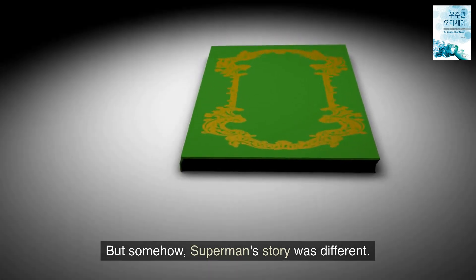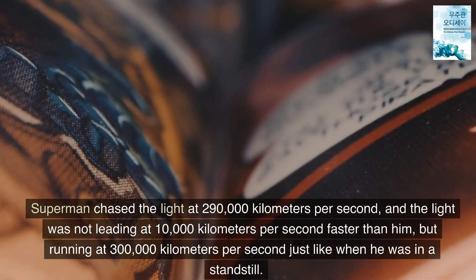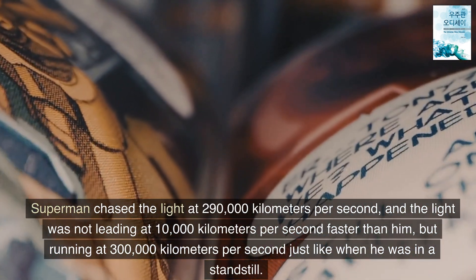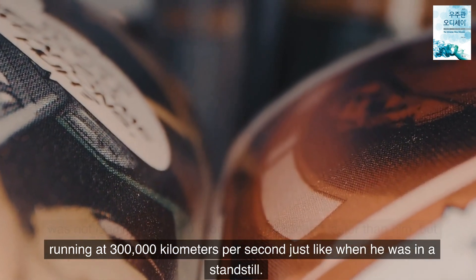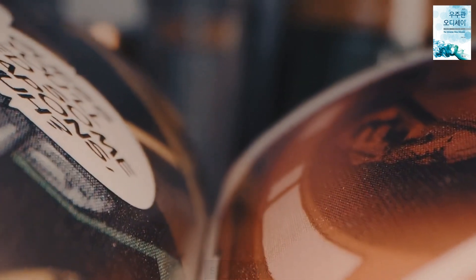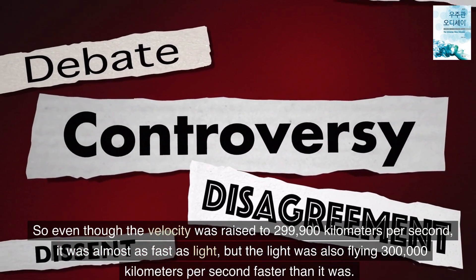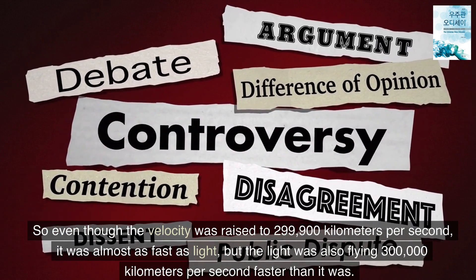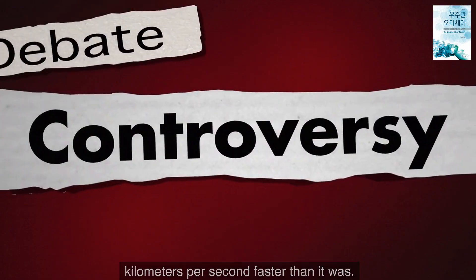But somehow Superman's story was different. Superman chased the light at 290,000 kilometers per second, and the light was not leading at 10,000 kilometers per second faster than him, but running at 300,000 kilometers per second just like when he was in a standstill. So even though the velocity was raised to 299,900 kilometers per second, it was almost as fast as light, but the light was also flying 300,000 kilometers per second faster than it was.